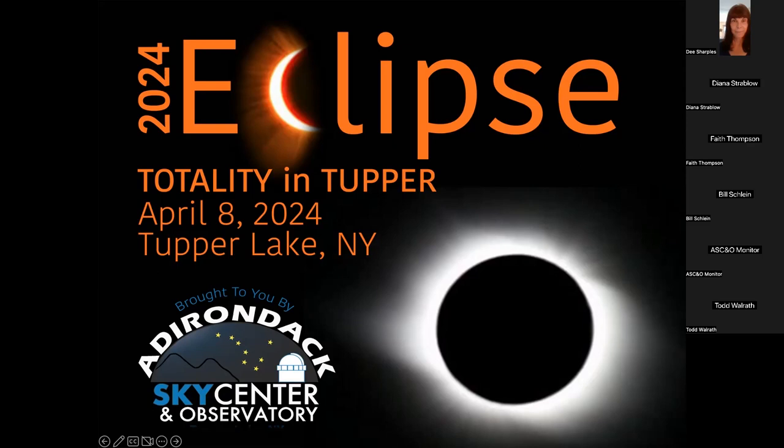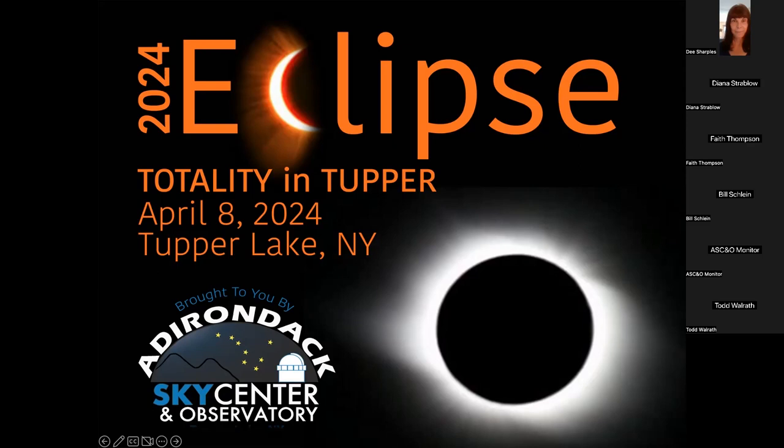We have arranged for the moon to pass in front of the sun on April 8, 2024, and Tupper Lake is right in the path of totality for 3 minutes and 33 seconds. In addition to us, the library, the village, the town, the Wild Center, the schools, Tupper Arts, we're all creating a community-wide event for anybody who wants to come up for that.